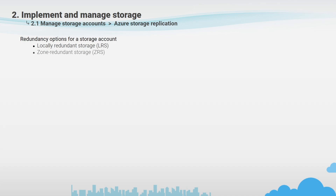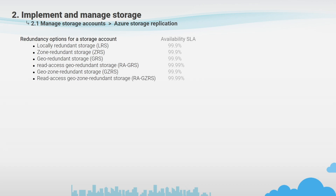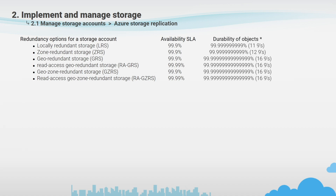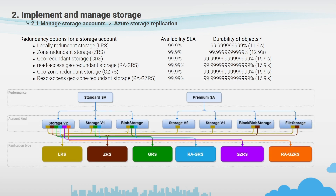Zone Redundant Storage replicates your data synchronously across three Azure availability zones in the primary region, giving you nine copies of your data — three per zone. Each availability zone is a separate physical location with independent power, cooling and networking. ZRS is suitable for scenarios that require consistency, durability and high availability with low latency. If primary region redundancy options may not protect against a regional disaster where multiple zones are permanently affected, you can opt for redundancy in secondary regions, which has two options: Geo-Redundant Storage (GRS) and Geo-Zone-Redundant Storage (GZRS).